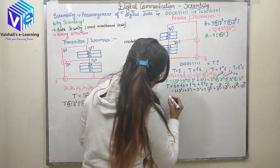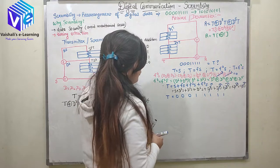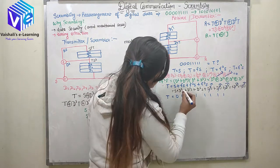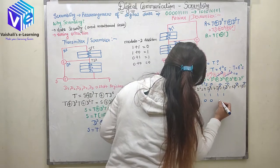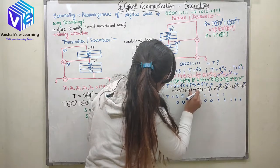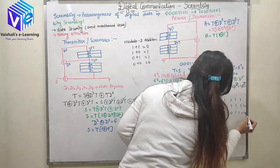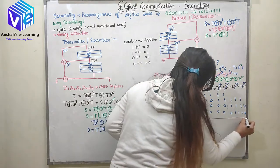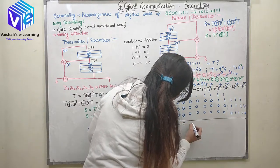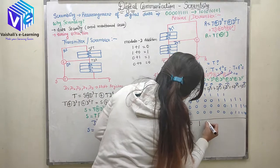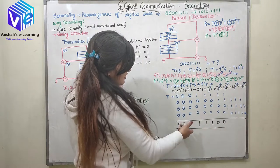Starting from S with a 3-bit delay (three zeros), then S again, followed by 5-bit and 6-bit delays. Summing all of these together: adding all the rows, the output gives 0, 0, 0, 1, 1, 1, 0, 0. This is how my rearranged scrambled data looks.